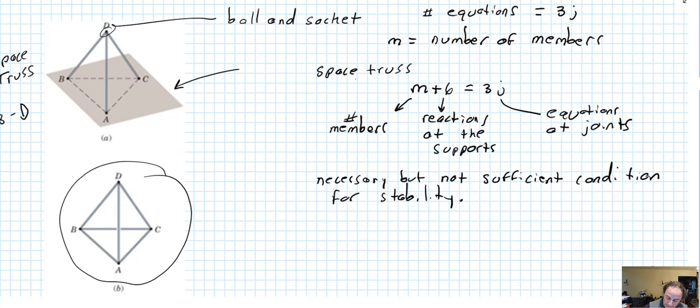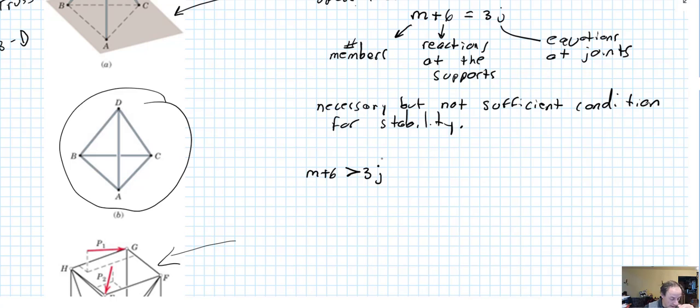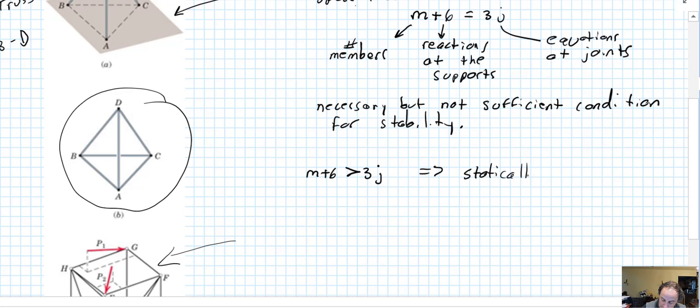So if the truss has, comes in this way with the equation m plus 6 greater than 3j. Keep wanting to make the little hat there. This is just a variable j, not a unit vector. If it's greater than it, since it has more than the minimum number of members that will be required for stability, the truss is statically indeterminate.